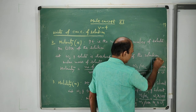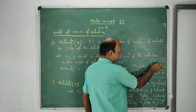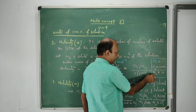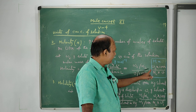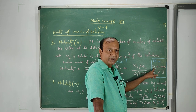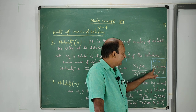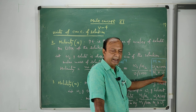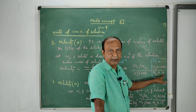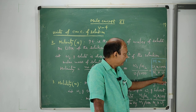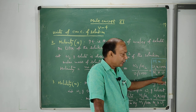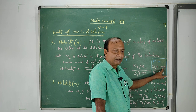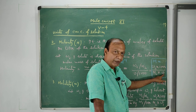Molarity equals to W2 into 1000 by M2 into V. Remember, here W2 is the weight of the solute in gram, and V is the volume of the solution in cubic centimeter — because we have already converted cubic centimeter to liter.